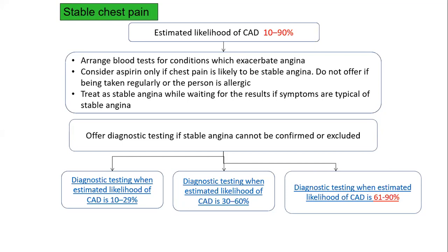We can treat the patient as stable angina while awaiting other investigations. Now, if we can't confirm stable angina, we can classify further — into 10 to 29%, 30 to 60%, and 61 to 90%. In the lower range of pre-test probability (10 to 29%), coronary CT is the investigation of choice. Calcium scoring is done: if zero, we look for other causes; if more than 400, it is considered higher likelihood (61 to 90%); if in between, CT coronary angiography is done to determine significance.